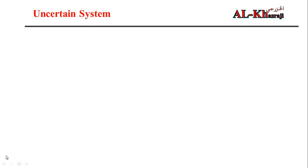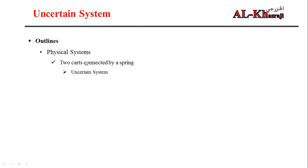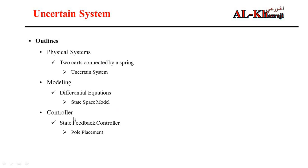In this video, we will see how uncertainty in the system affects our controller when we design one. The outline: we have a physical system of two carts connected by a spring, with uncertainty in the parameters. We will model the system using differential equations, derive the state space model, design a state feedback controller using pole placement, and simulate it in MATLAB to check whether the controller remains stable even if the system has uncertainty.